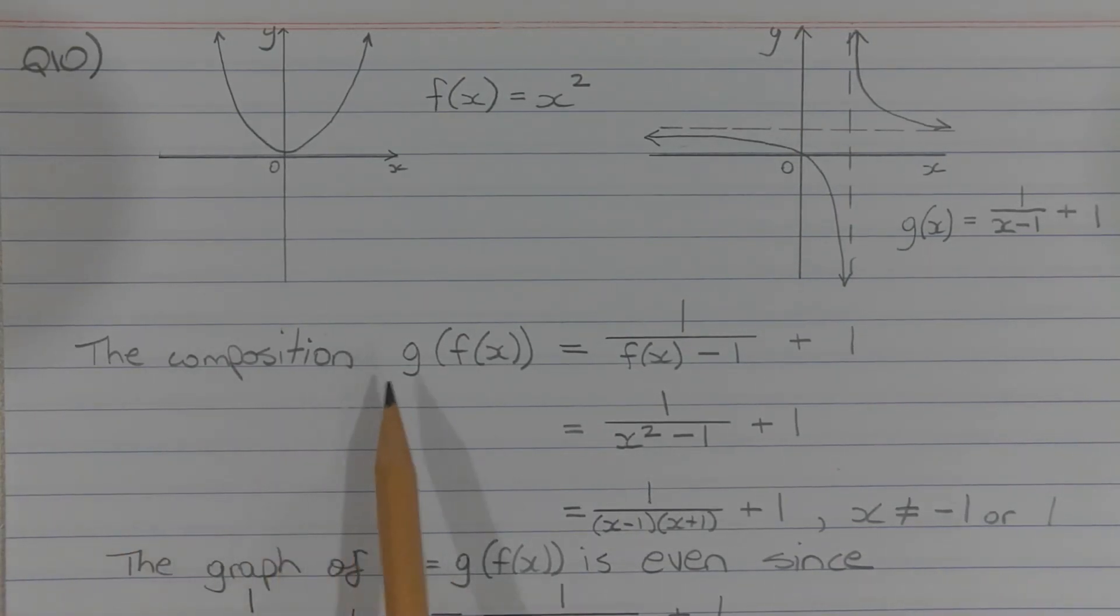Now the composition g of f of x is found by replacing the x with f of x. So that equals 1 over f of x minus 1 plus 1. But f of x is equal to x squared, so g of f of x is equal to 1 over x squared minus 1 plus 1.